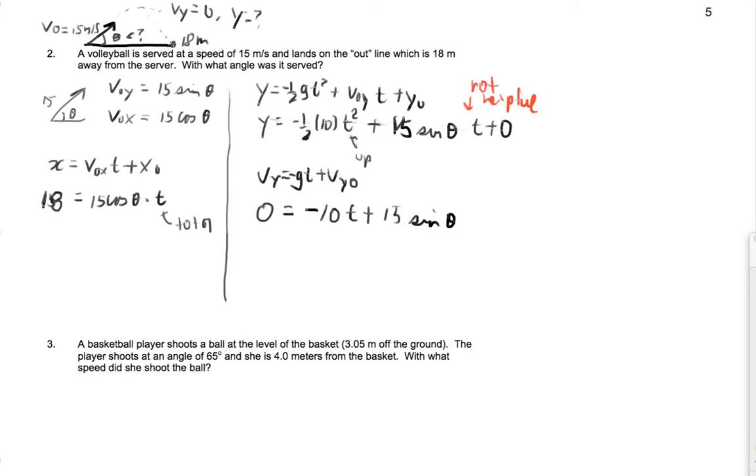We're going to come back to this formula in a second. Let me just try the third formula. So I have v y squared equals v naught y squared minus 2 times g times y minus 0.